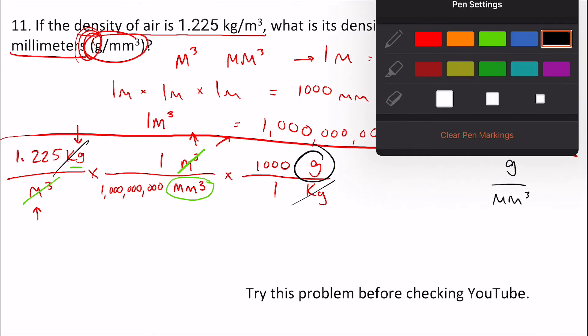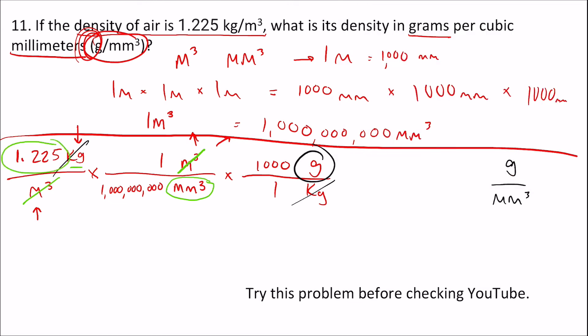To put this in the calculator, you multiply this number and this number, hit enter, and then divide it by the billion on the bottom, and that will give you your answer. The answer is 1.225 times 10 to the negative sixth grams divided by millimeters cubed.